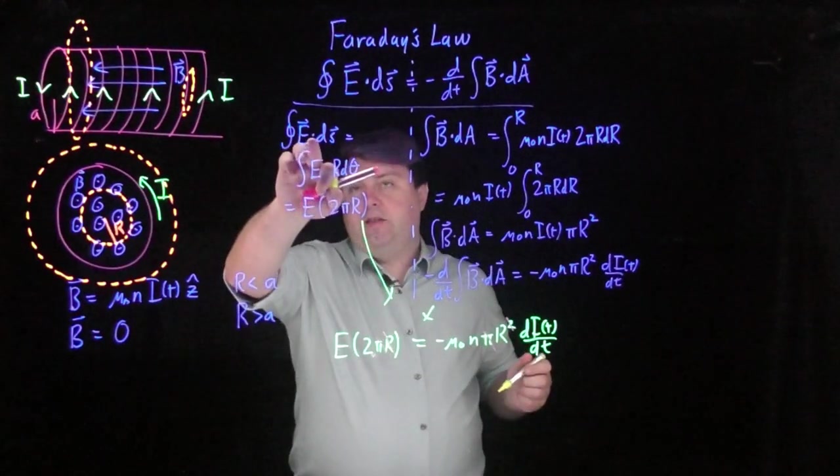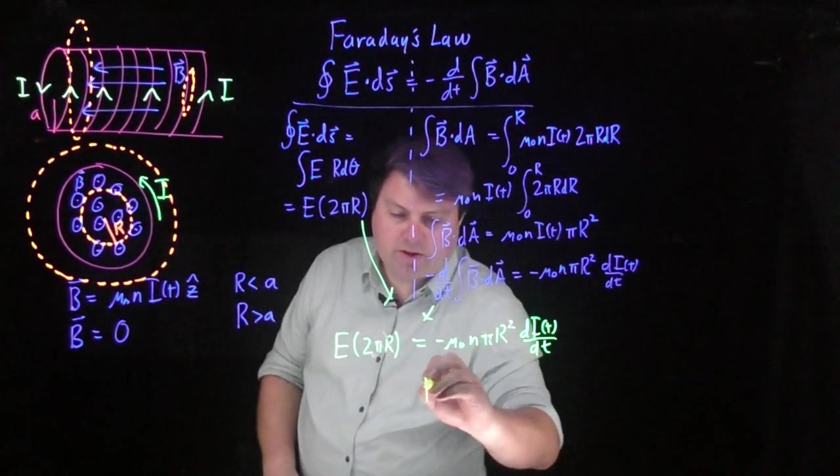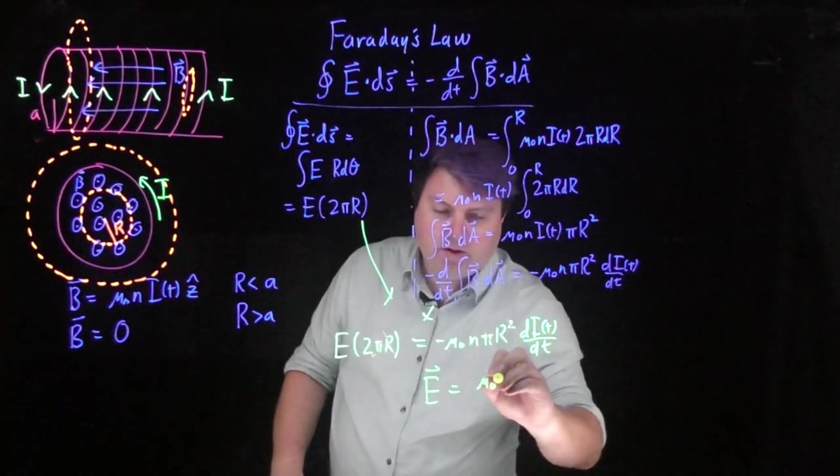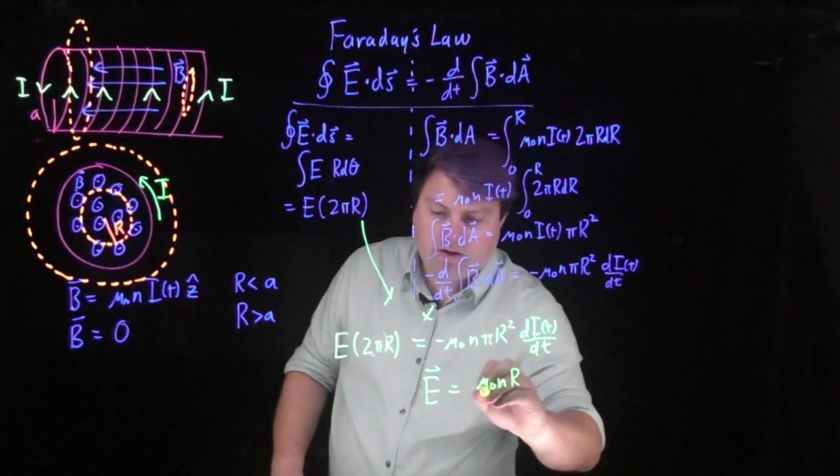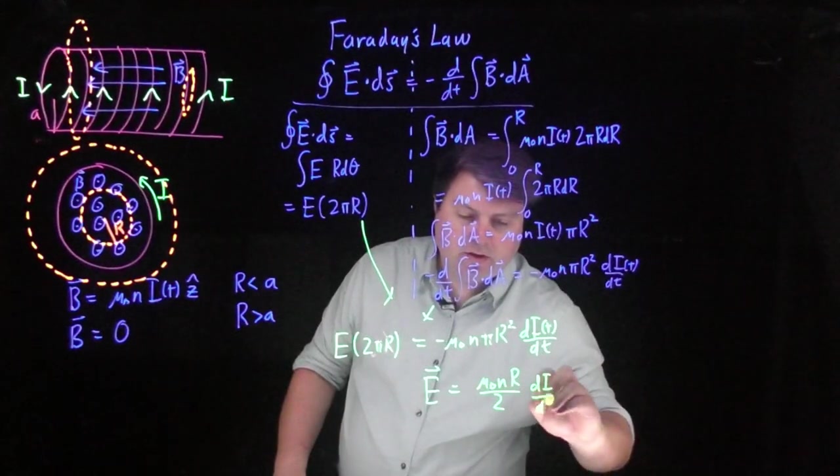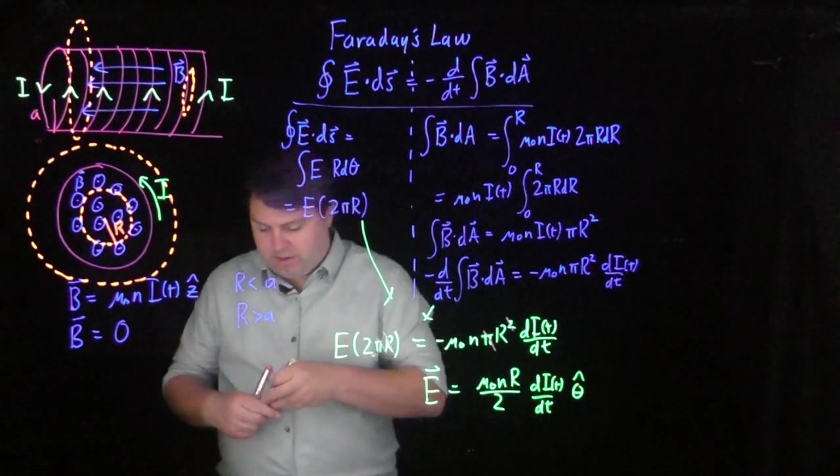And so in this dot product, I'm saying that my electric field is in the tangential direction. So my electric field will be mu naught n r over 2 times di of t dt in the theta hat direction.